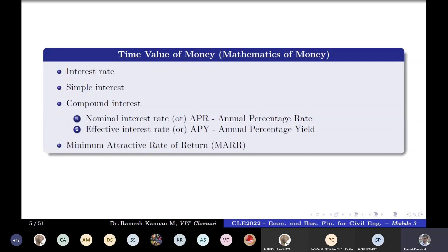Compound interest and effective interest rate account for the time value of money, so at the end you get 1610 rupees — slightly higher than the nominal rate. It won't be too much higher, but some quantum will be more. That is what is called annual percentage yield rather than annual percentage rate.